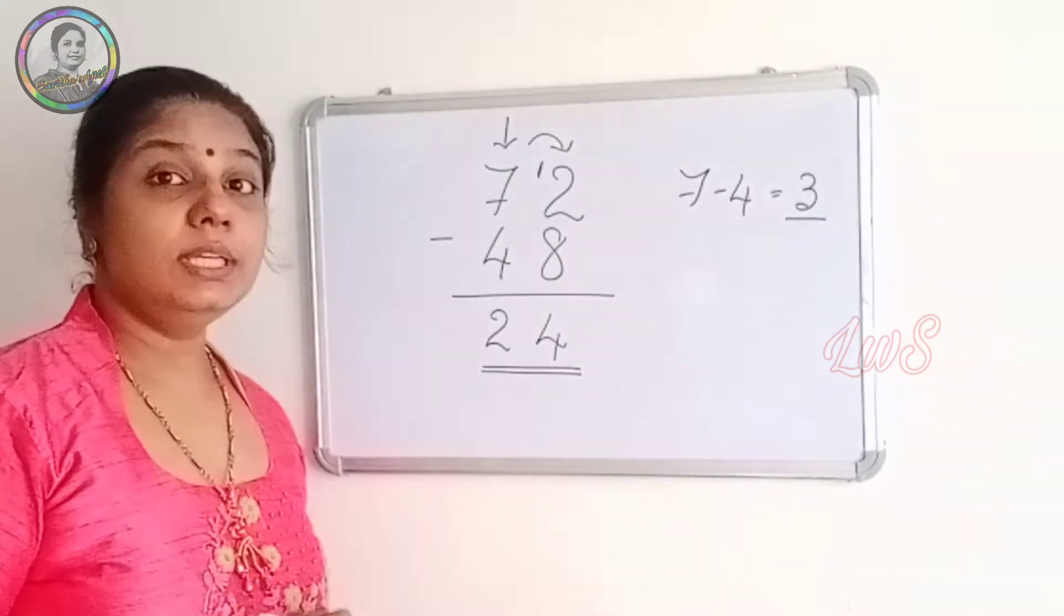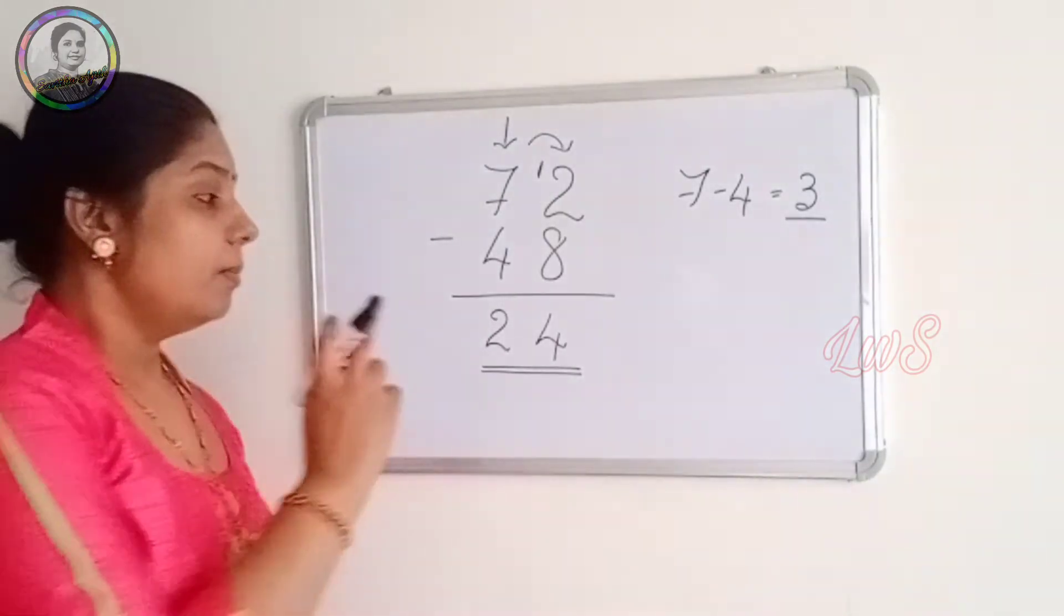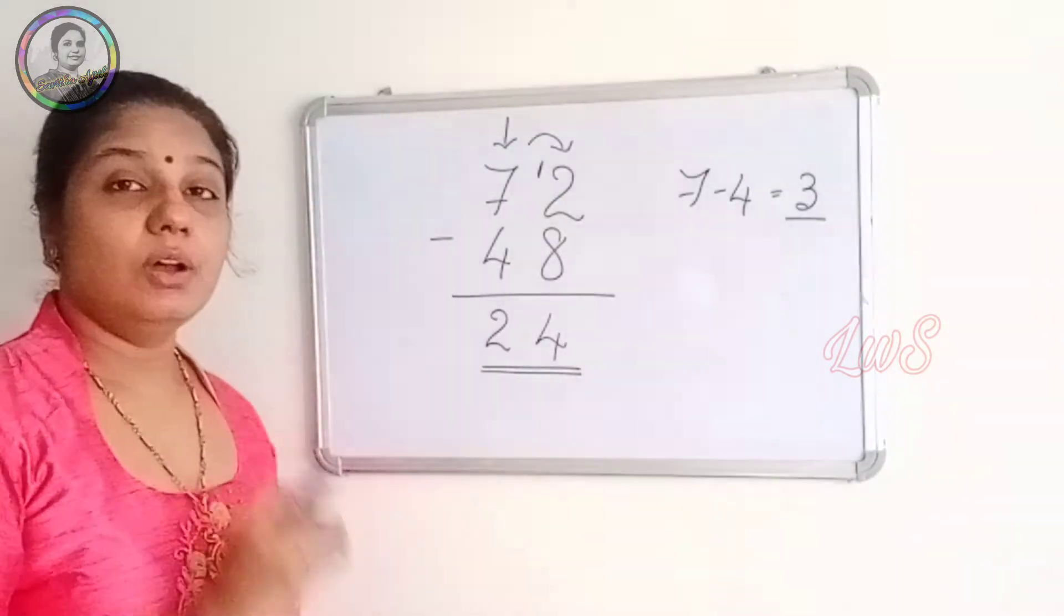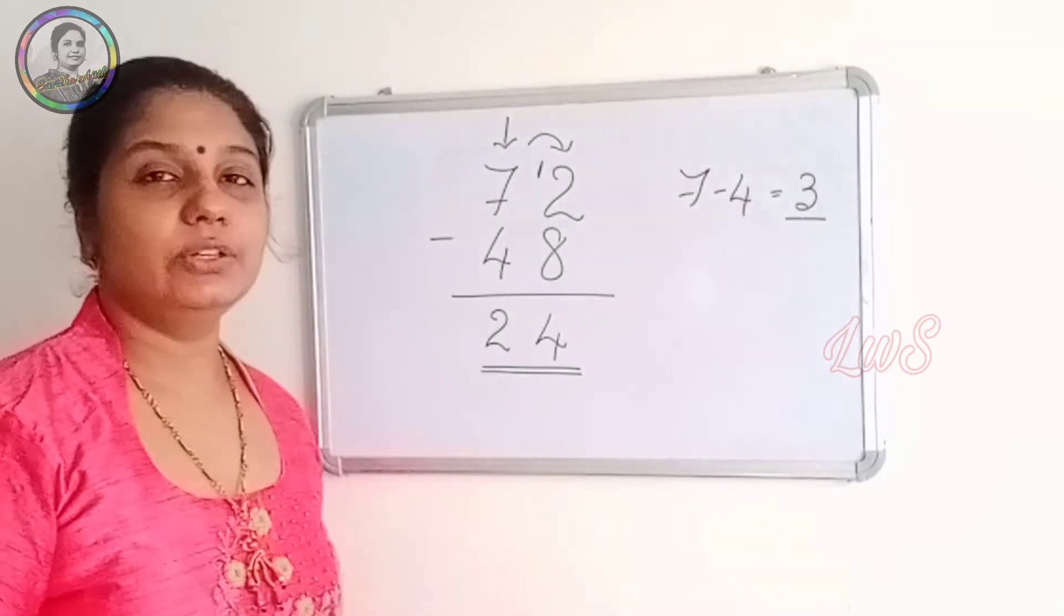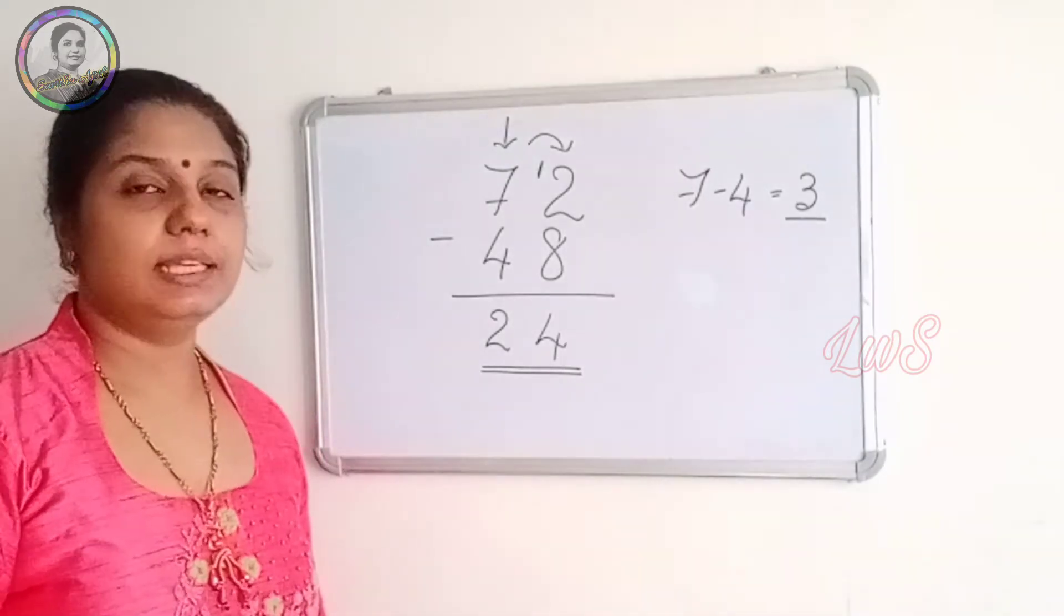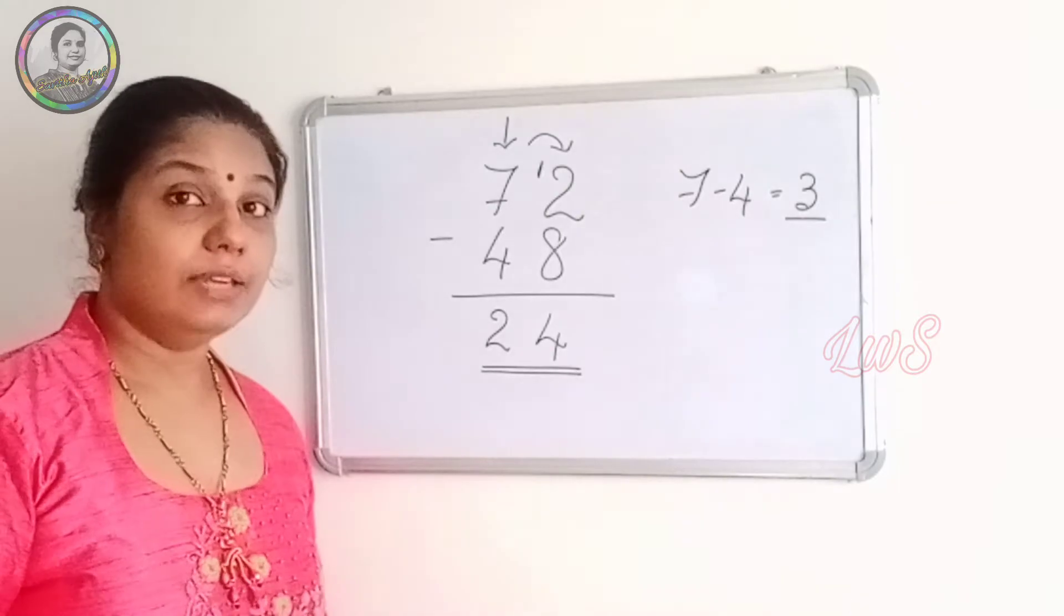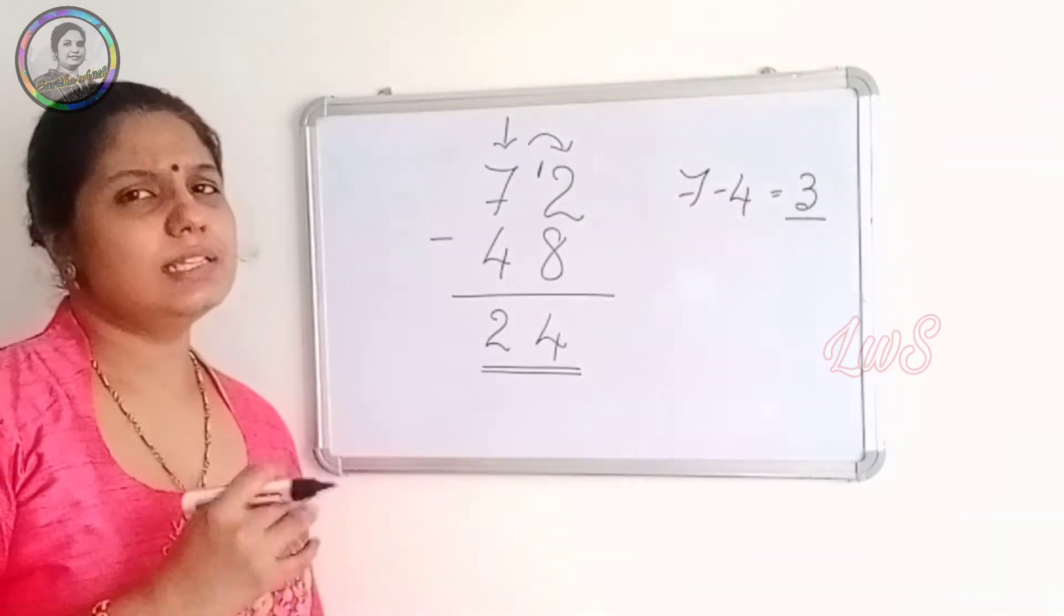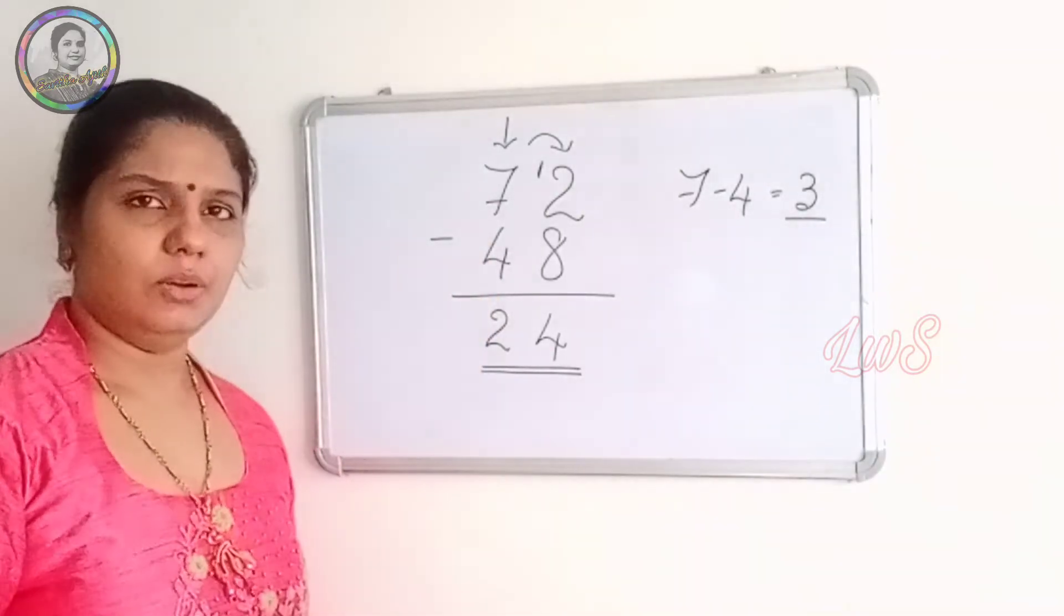So the only rule in the subtraction is, before writing the number, always look for your neighbor. Whether they are having enough. If they are not having enough, just give a 1 to them.